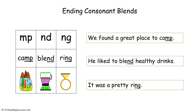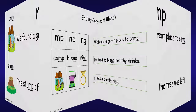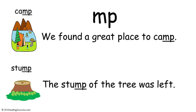If kids are ready, move to the second set of ending consonant blends: MP, ND, and NG. Explain to kids the letters MP blend together when said as in the words camp and stump. Then read the sentences with kids: 'We found a great place to camp' and 'The stump of the tree was left.'